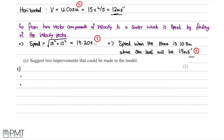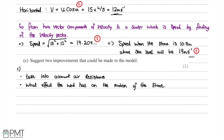In part c, we suggest two improvements to the model. First, when a stone falls through the air there is a force opposing its motion, known as air resistance, so one improvement would be to take air resistance into account. A second suggestion is to consider the effect of wind on the stone. This question is worth two marks, one for each correct suggestion.